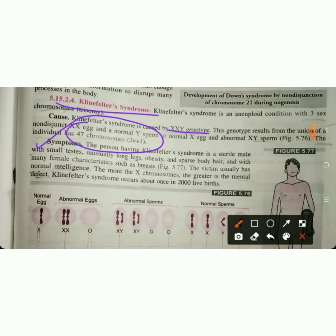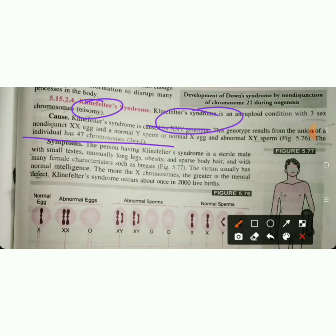So there are two factors for Klinefelter syndrome. This is an aneuploid condition with three sex chromosomes. What do we call this condition? Trisomy. The cause is the main thing. The cause is XXY genotype, and the chromosome count is 47.